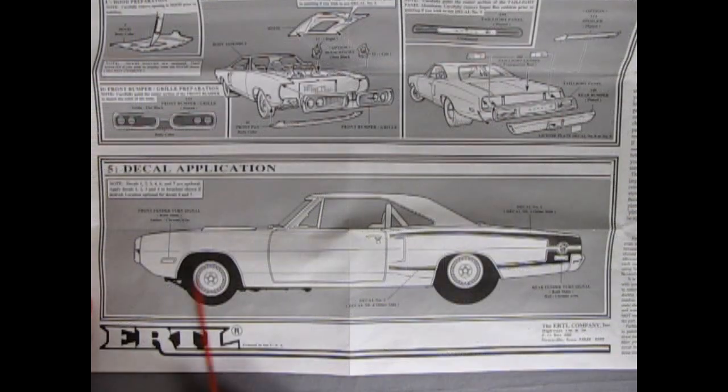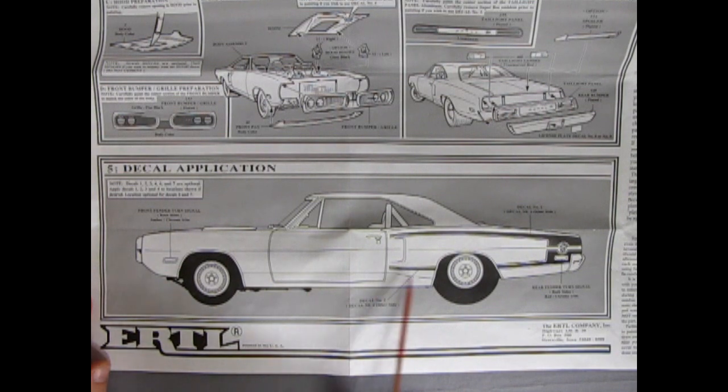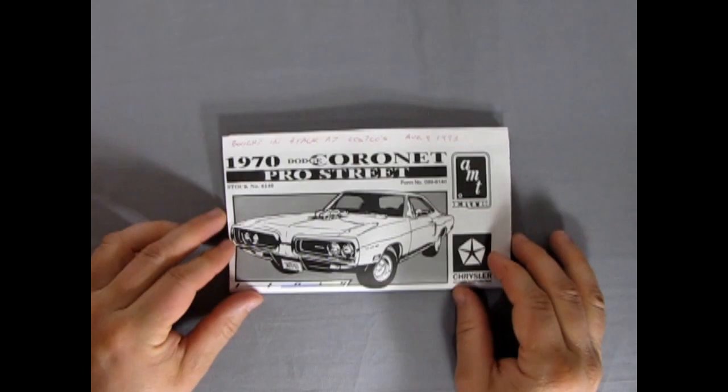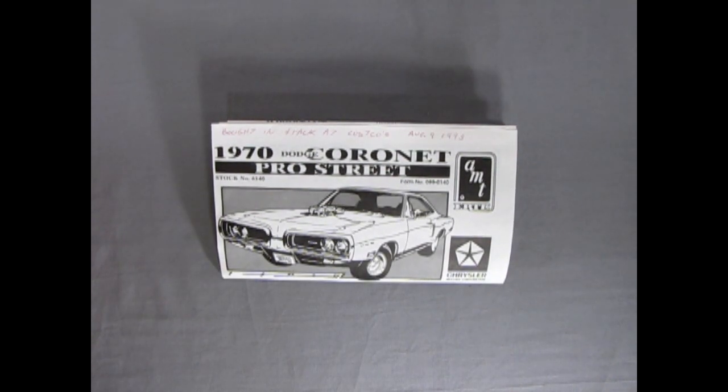And finally we've got our decal application chart here. And there's the front fender turn signals dropping in as well as your big super B stripe and your rear fender turn signal. And then you got yourself a real bomb. Can you dig it? And that finishes our look at this rag here as we check out the instructions from our 1970 Dodge Coronet Pro Street.